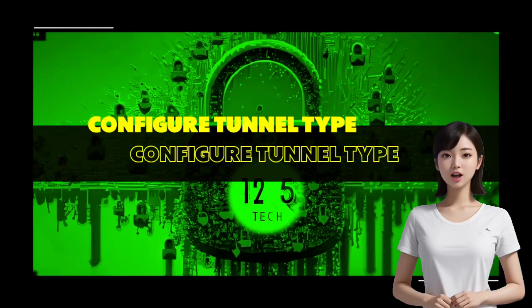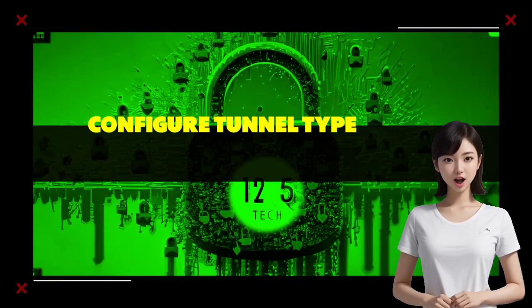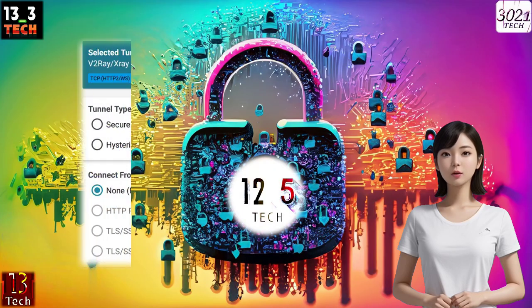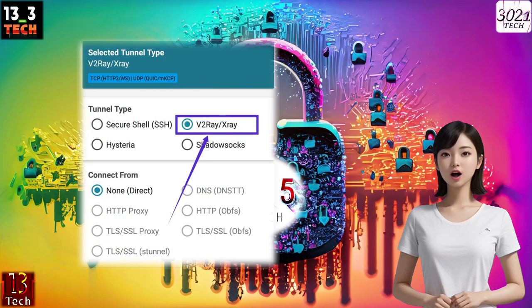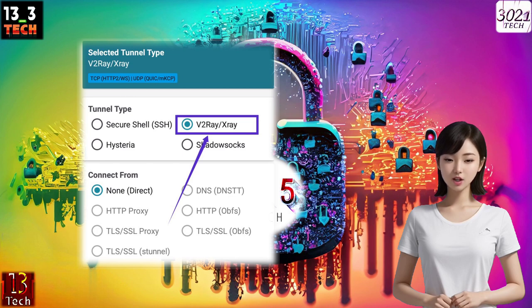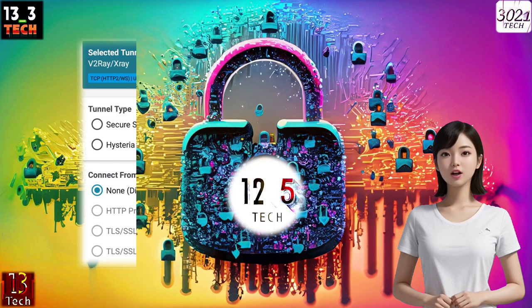Step 4: Configure tunnel type. Choose the tunnel type as V2Ray X-Ray protocol and the connection type as none. Click the save button to confirm your selection and return to the previous screen.